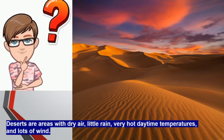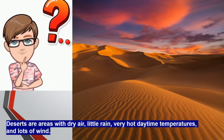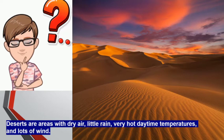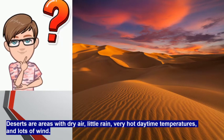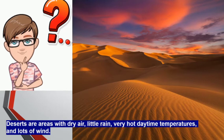Next, we move on to deserts. When anybody says deserts, what comes to your mind? Something like this image? Land covered with sand and no forest or trees — yes, this is what a desert is. Deserts are areas with dry air, little rain, very hot daytime temperatures, and lots of winds.